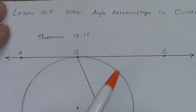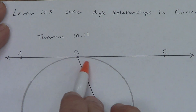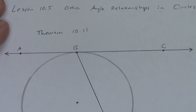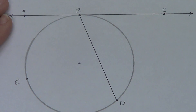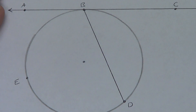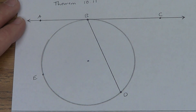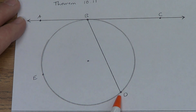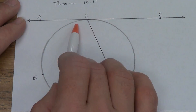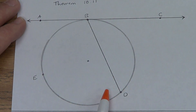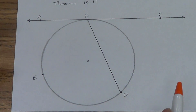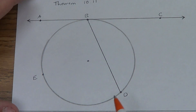Hopefully you're thinking: linear pair postulate. We know that these two angles together add to equal 180. What about the circle itself? We have a minor arc and a major arc, and together they add to equal 360 degrees. So the angles add to equal 180, the arcs add to equal 360, and 180 is half of 360. Each angle, therefore, is half of its arc.